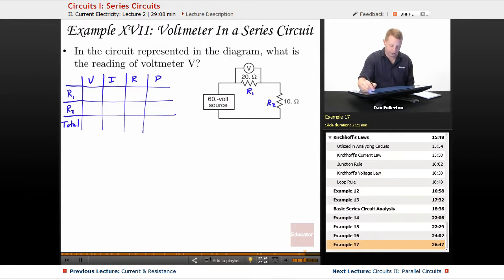Alright, and we'll start filling in what we know. We have a 60 volt source, so there's our total. We know that R1 is 20 ohms. We know that R2 is 10 ohms.